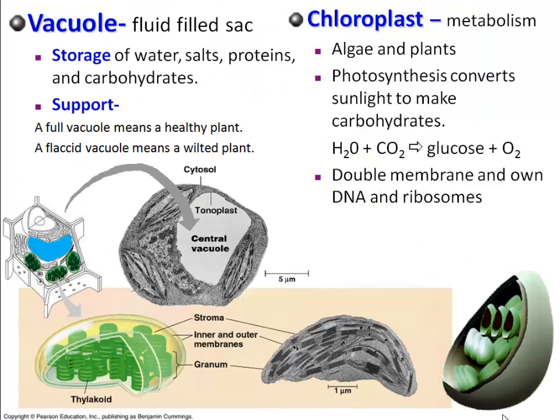Of those structures, I hope you identified the vacuole. It's a fluid-filled sac used for two purposes. First is storage — that's water, salts, proteins, carbohydrates — you name it, the plant will store it in this compartment. It really becomes like the junk drawer of your cell.